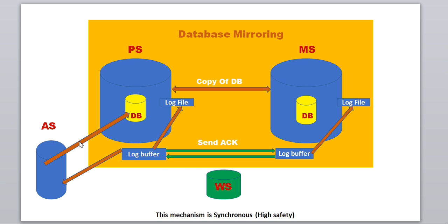If we configure the database mirroring for asynchronous, here's how it works: in the same way, the application server processes the request to the principal database, the log buffer writes a log to the log file on the principal server, and at the same time sends a copy of the log to the mirror server. The mirror server writes the log to its log file, but here the principal server will not wait for the ACK signal from the mirror server — it allows further requests from the application side.